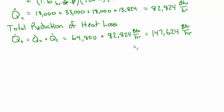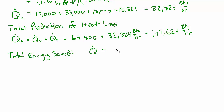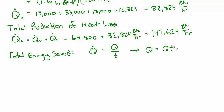That's still an energy transfer rate — BTUs per hour, not BTUs. To find the total energy saved, recall that Q-dot equals Q over time, so Q equals Q-dot times time. The time here is the total unoccupied hours, because that's when the night setback is applied. So the heat transfer rate times the total unoccupied time gives the quantity of energy saved.